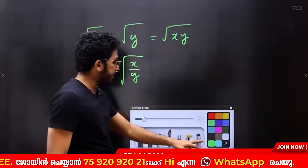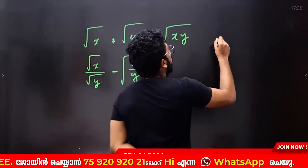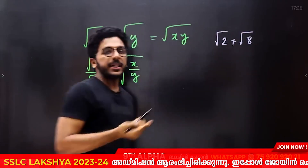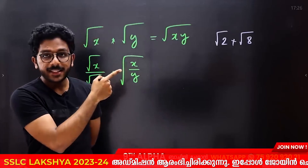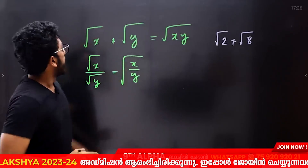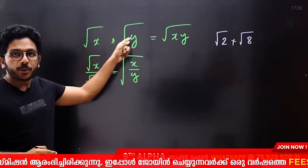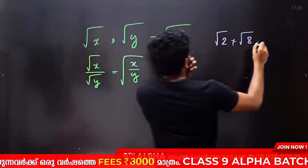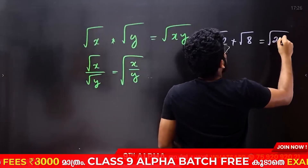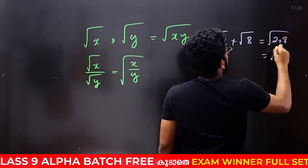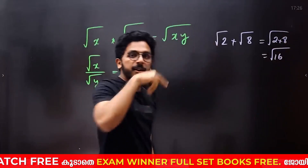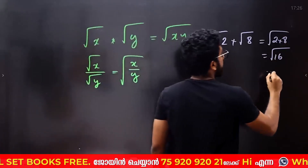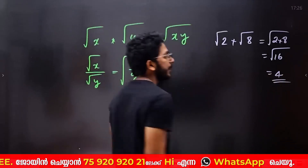Let's take an example: root 2 into root 8. I have a multiplication. Separate by root and multiply — root of 2 into 8 is root 16. What is root 16? The answer is 4. That's right.